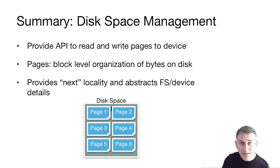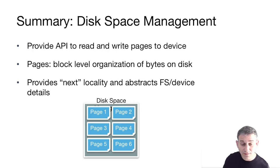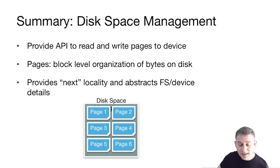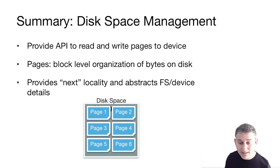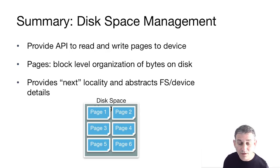To summarize, the disk space management layer provides an API to read and write pages to a logical device. A page is a block-level organization of bytes on disk, and we have a notion of 'next' which gives us locality and abstracts the details of whether we have a raw device or a file system underneath — just providing a notion of sequential pages.